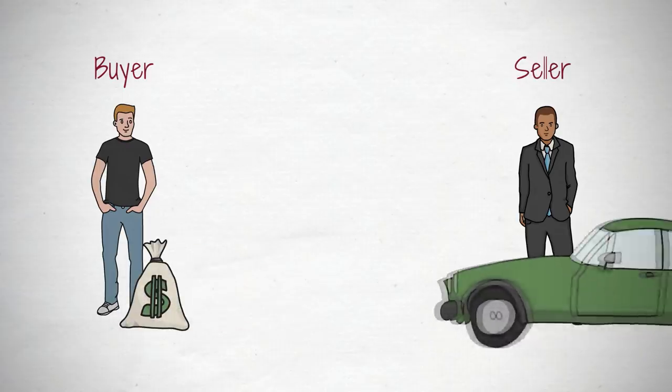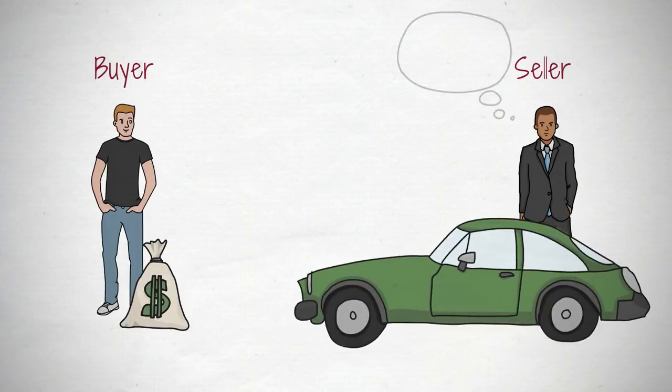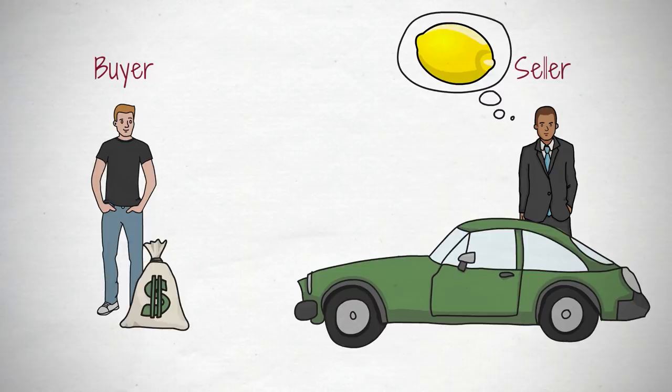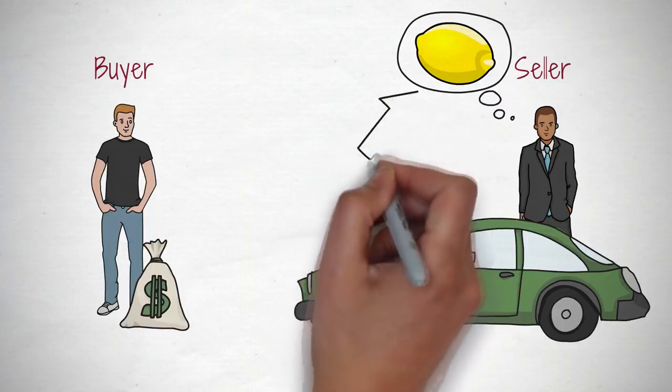For example, sellers of used cars know whether their vehicle is of good quality or breaks down every 10 miles — a so-called lemon — but potential buyers don't. As a result, sellers overcharge.